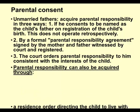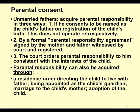Parental responsibility can also be acquired through a residence order directing the child to live with the father, being appointed as the child's guardian, marriage to the mother, or adoption of the child. So the unmarried father can have the child ordered to live with them, be appointed as guardian, get married to the child's mother — in which case they automatically become the legal father if they are the biological father — or adopt the child.